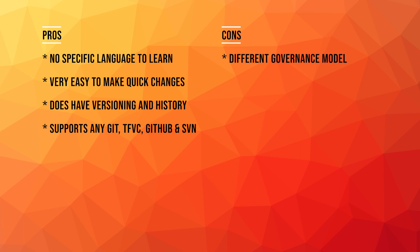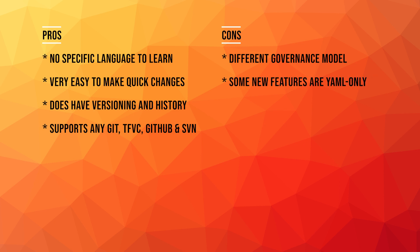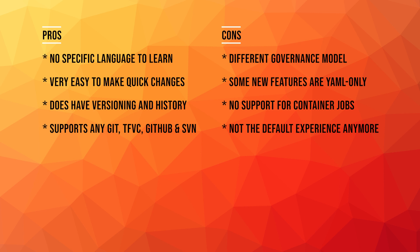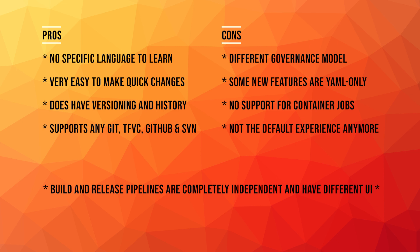There are a few cons of classic pipelines. The governance mechanism is different from the rest of your code because it's not code — it's just UI. Some new features, like environments, have been implemented for YAML pipelines only and are not present in the classic ones. Classic pipelines also don't support container jobs — jobs executed on top of a hosted agent but inside a container for better isolation. It is also not the default experience anymore; the default is now YAML. Finally, and this can be both a pro and a con, there is a clear separation between build and release pipelines.